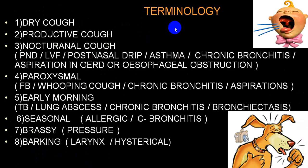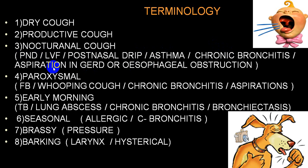Depending on quality, cough is divided into dry, productive, and nocturnal types. Nocturnal cough is characteristic of PND, acute left ventricular failure, post-nasal drip, bronchial asthma, chronic bronchitis, and aspiration in GERD or esophageal obstruction. Paroxysmal cough occurs in foreign body, whooping cough, chronic bronchitis, or aspiration in GERD.